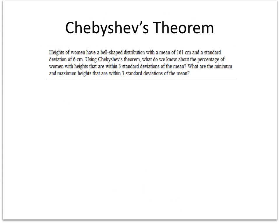All right, Chebyshev's theorem. Heights of women have a bell-shaped distribution with a mean of 161 centimeters and a standard deviation of 6 centimeters. Using Chebyshev's theorem, what do we know about the percentage of women with heights that are within three standard deviations of the mean? And what are the minimum and the maximum heights?